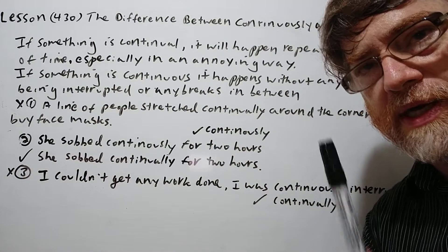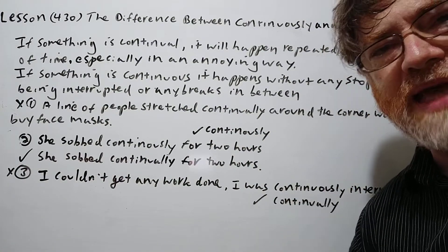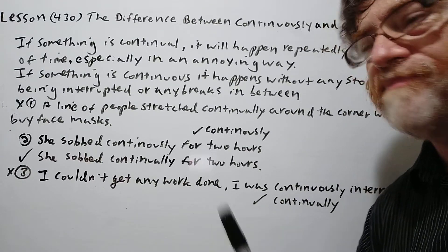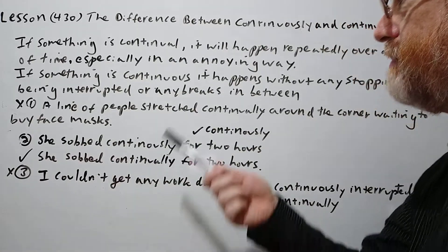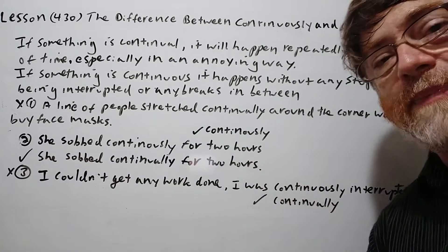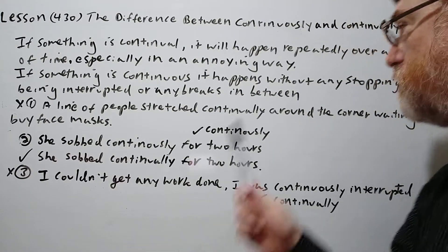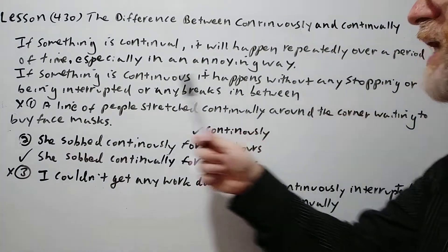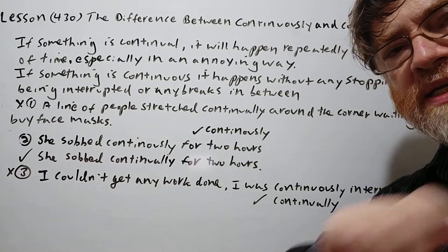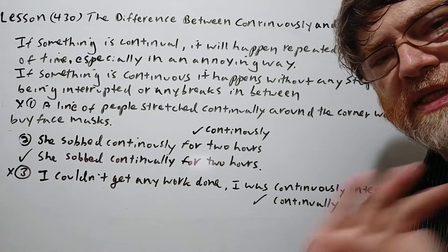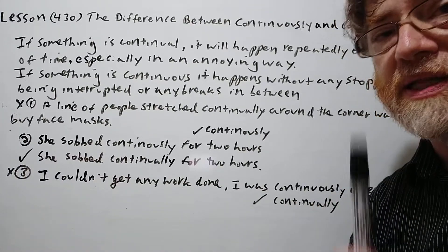With continual, annoying is a key word. Usually it bothers you and it's annoying that it's happening so often. If something is continuous, or something is happening continuously, it happens without stopping — it just goes in a row. There are no breaks in between, no stopping or being interrupted. You're trying to emphasize that it's just continuous, and it's not necessarily annoying.